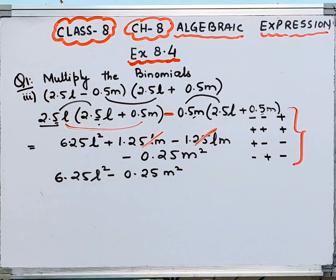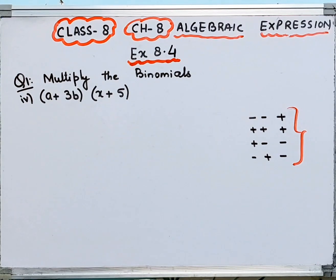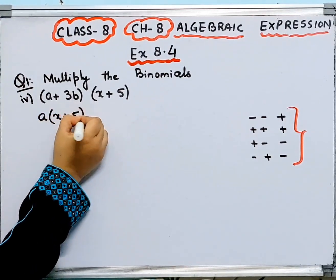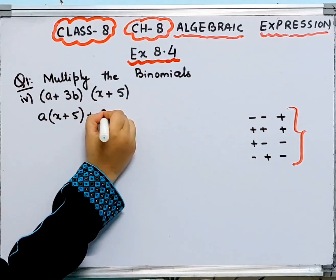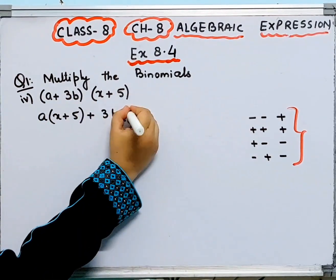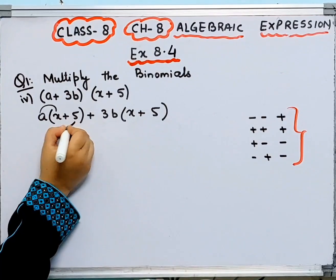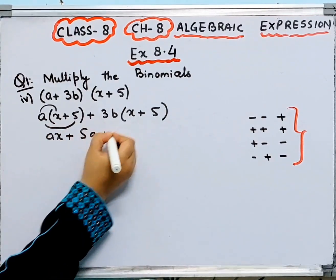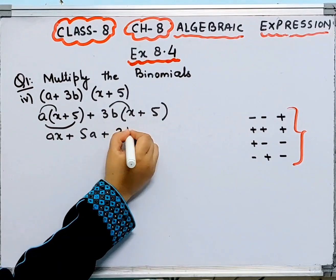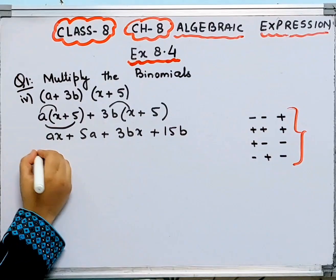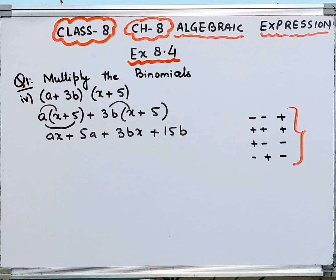Now let's go to the fourth part. First, multiply a by the whole expression x plus 5: that gives ax plus 5a. Then multiply 3b by the whole expression x plus 5: that gives 3bx plus 15b. There are no like terms to combine further, so this is your answer.